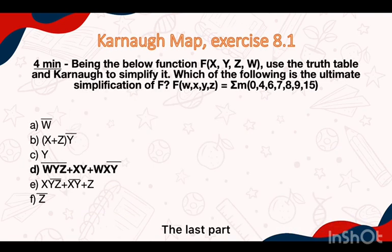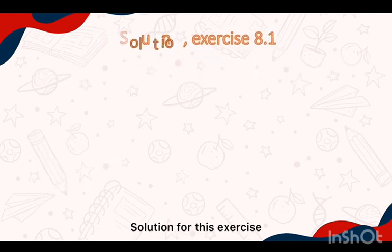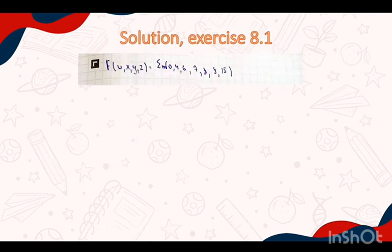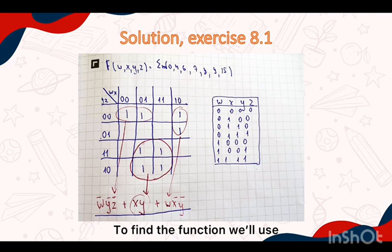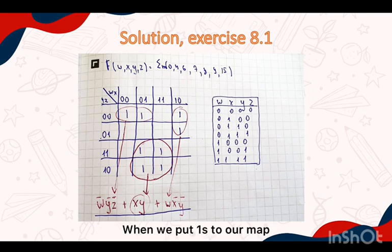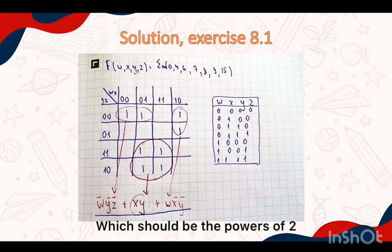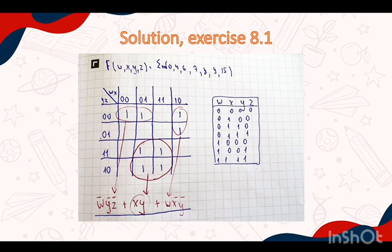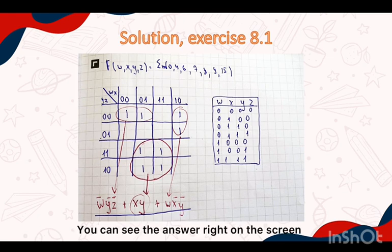The last part — solution for this exercise. To find the function, we use minterms in a Karnaugh map. When we place 1s in our map, we need to combine them by the maximum possible number, which should be a power of 2. For this exercise you can see the answer right on the screen.